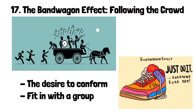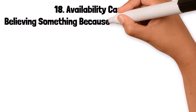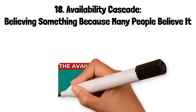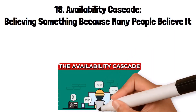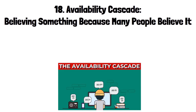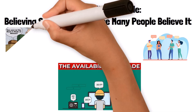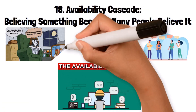18. Availability Cascade: believing something because many people believe it. An availability cascade is a self-reinforcing process where a collective belief gains more and more plausibility through repeated exposure in public discourse. As more people believe and talk about it, it becomes more widely accepted, regardless of its truth. For example, a rumor might become widely accepted as fact simply because it is repeated often enough, even if there is no evidence to support it.